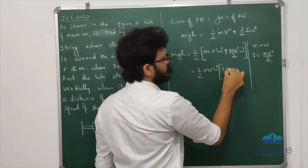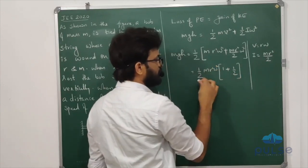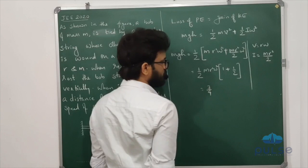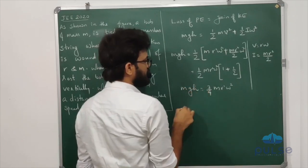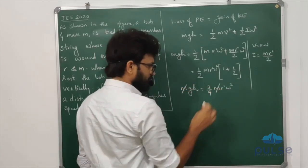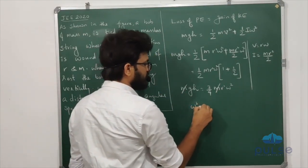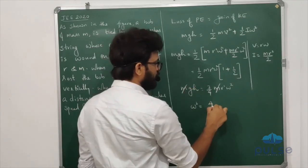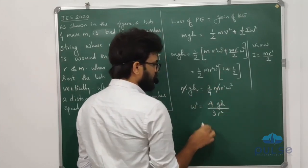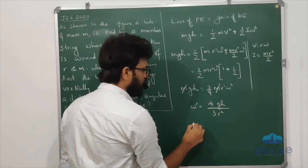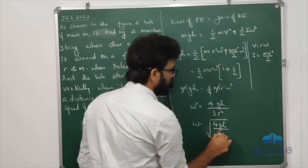Simplifying: 1 plus one-half equals three-halves, and three-halves times one-half equals three-quarters. So we get three-quarters times MR squared times omega squared equals M times g times h. Cancelling M, omega squared equals 4gh divided by 3R squared. Therefore, omega equals the square root of 4gh divided by 3R squared.